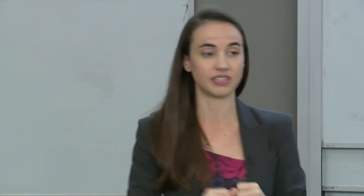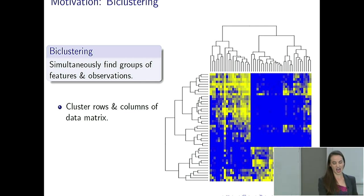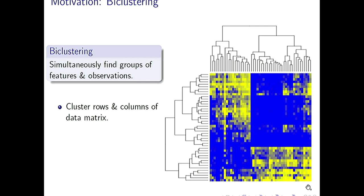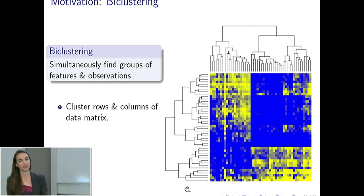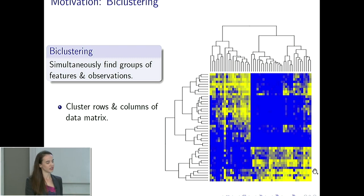If we organize our data — observations and features — in the form of a data matrix, what you're looking at is something called the cluster heat map. This is an actual heat map of the data matrix itself, where yellow means very high values and blue means very low values for each individual entry. So each pixel in this image is an entry in your data matrix. This is a cluster heat map, meaning clustering was applied to both the columns and rows of the data, and the data was reorganized according to that clustering.